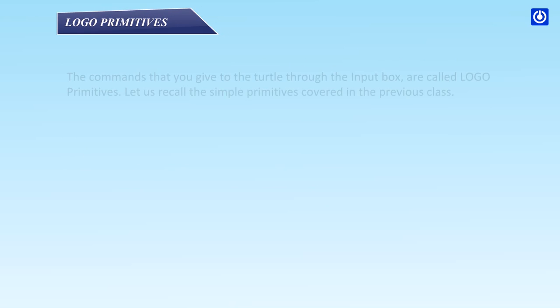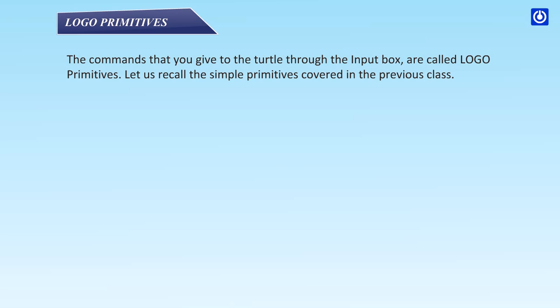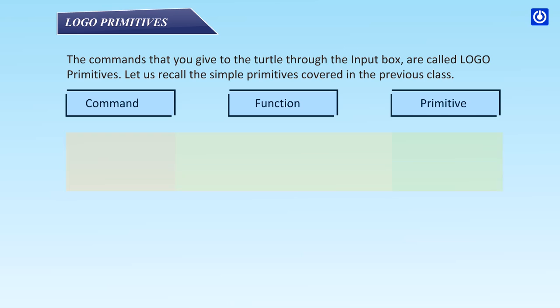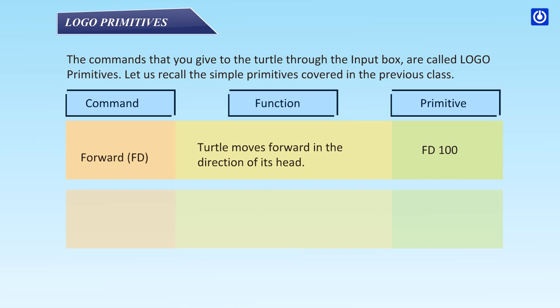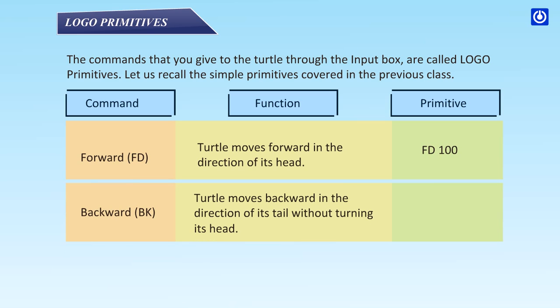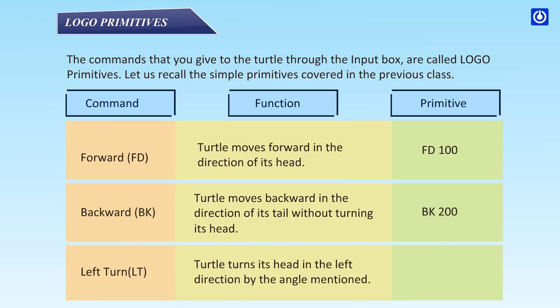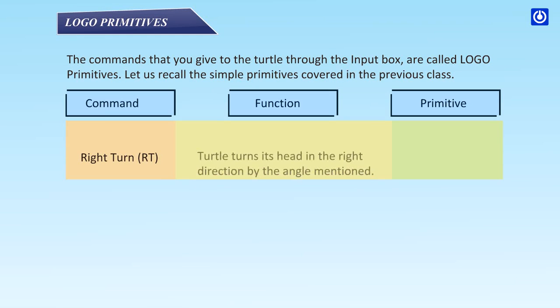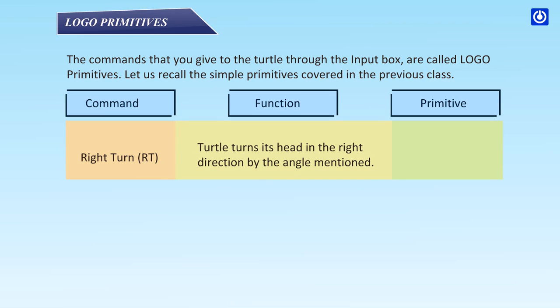The commands that you give to the turtle through the input box are called Logo primitives. Forward (FD): turtle moves forward in the direction of its head — e.g., FD 100. Backward (BK): turtle moves backward in the direction of its tail without turning its head — e.g., BK 200. Left turn (LT): turtle turns its head left by the angle mentioned — e.g., LT 45. Right turn (RT): turtle turns its head right by the angle mentioned — e.g., RT 45.